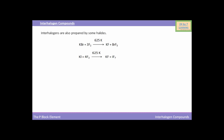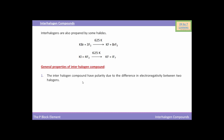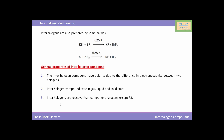The general properties of interhalogen compounds include polarity, due to the difference in electronegativity between the two halogens. Interhalogen compounds exist in gaseous, liquid, and solid states. Interhalogens are more reactive than their component halogens, except fluorine, and they act as strong oxidizing agents.